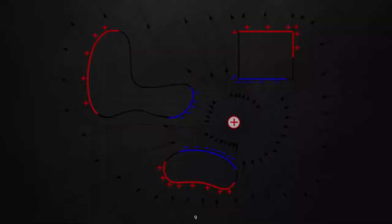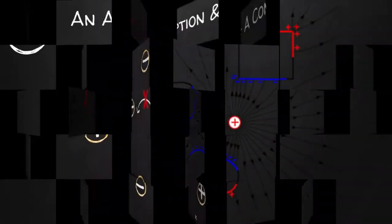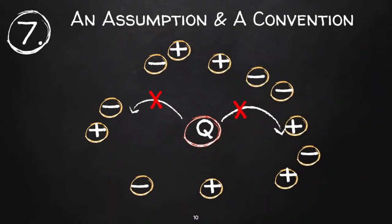A field is a physical quantity that can take different values at different points in space, for example, temperature. One of the main assumptions of electromagnetism is that placing a charge in an electric and magnetic field will not affect the position and motion of the charges that produce the electric or magnetic fields.